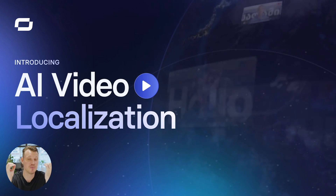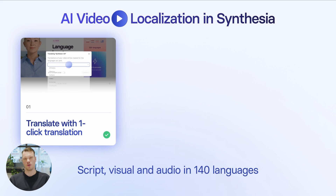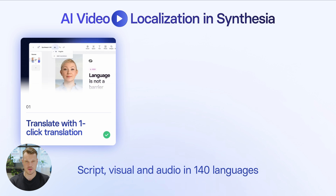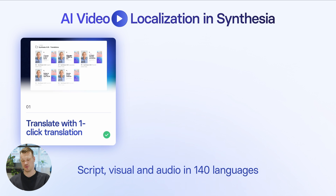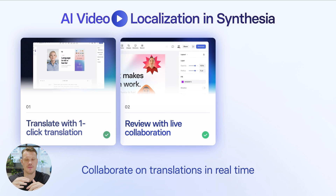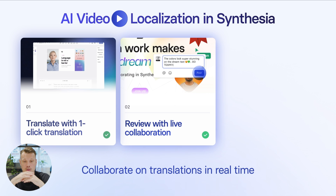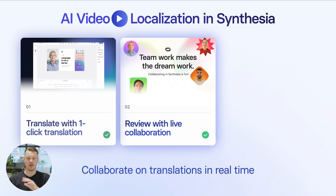With Synthesia, we want to make that process as seamless as possible with as little busy work as possible. Many of you using Synthesia today are probably already using it for localization and translation. One of the things already in the product is one-click translation — you've made your video in your mother tongue, you click translate, select the language, and we'll make new versions of the video, translating not just the script but all the elements on screen. Once you have your translated versions, you can get them reviewed and approved by colleagues or an external translation agency using our collaborative platform.